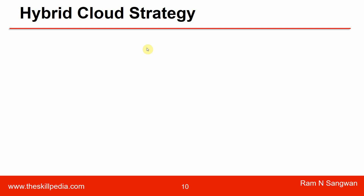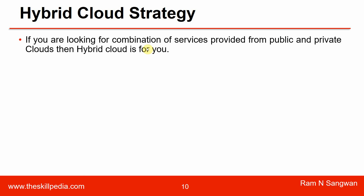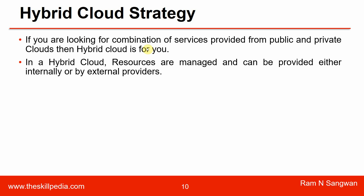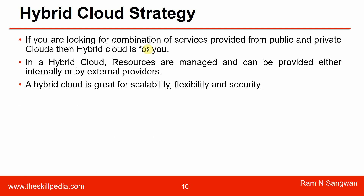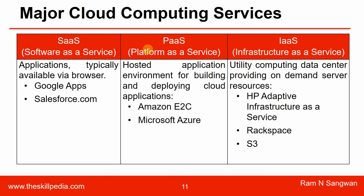Hybrid cloud strategy is basically a mix of private and public cloud — the best of both options merged together. If you are looking for a combination of services from public and private clouds, hybrid cloud is for you. In a hybrid cloud, resources are managed and can be provided either internally or by external providers. A hybrid cloud is great for scalability, flexibility, and security. For example, ERP on private cloud and sales and email on public cloud are examples of a hybrid cloud strategy.